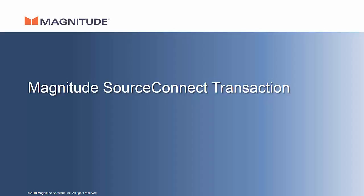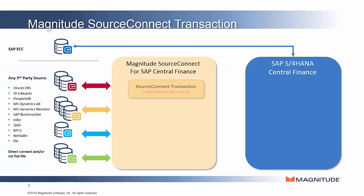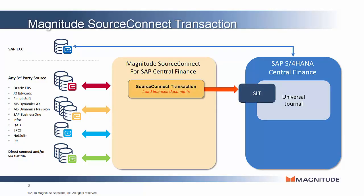SourceConnect Transaction, the first of these three modules, specifically integrates the financial transactions from any non-ECC data source into Central Finance. It includes pre-built adapters for the most common commercial ERP systems, and also provides a universal API to consume data from any source — whether a smaller commercial ERP system, a custom application, or where data privacy or geographical restrictions may prevent access directly to the source system.